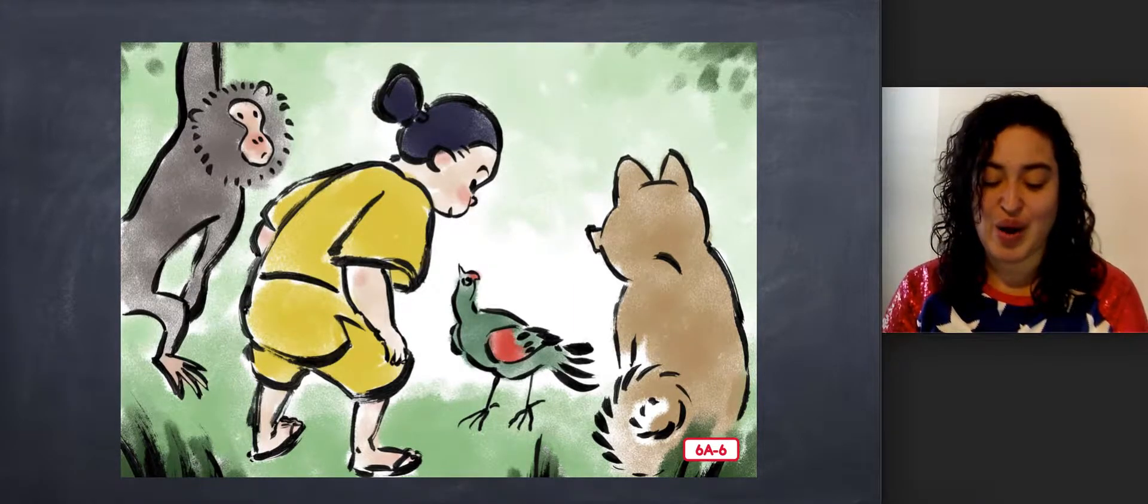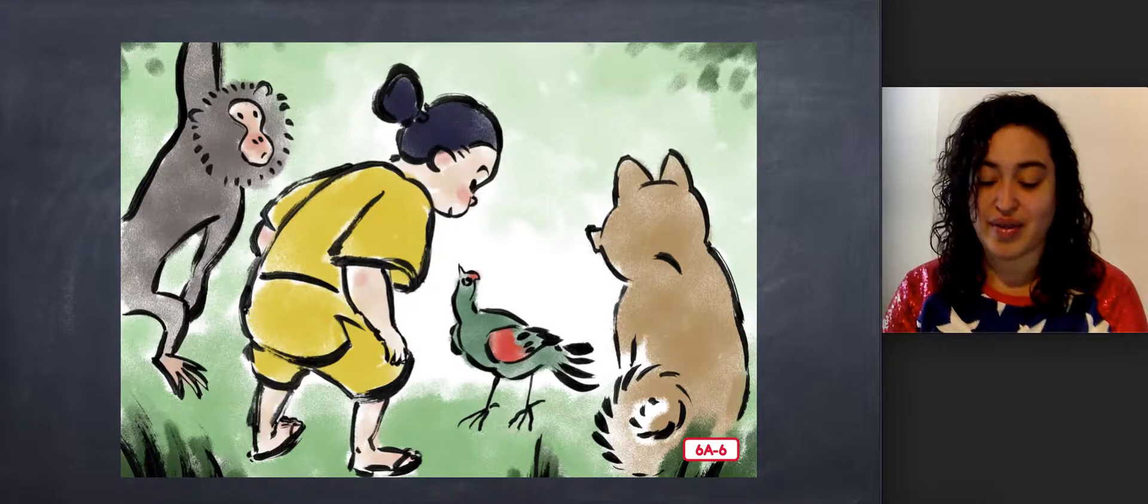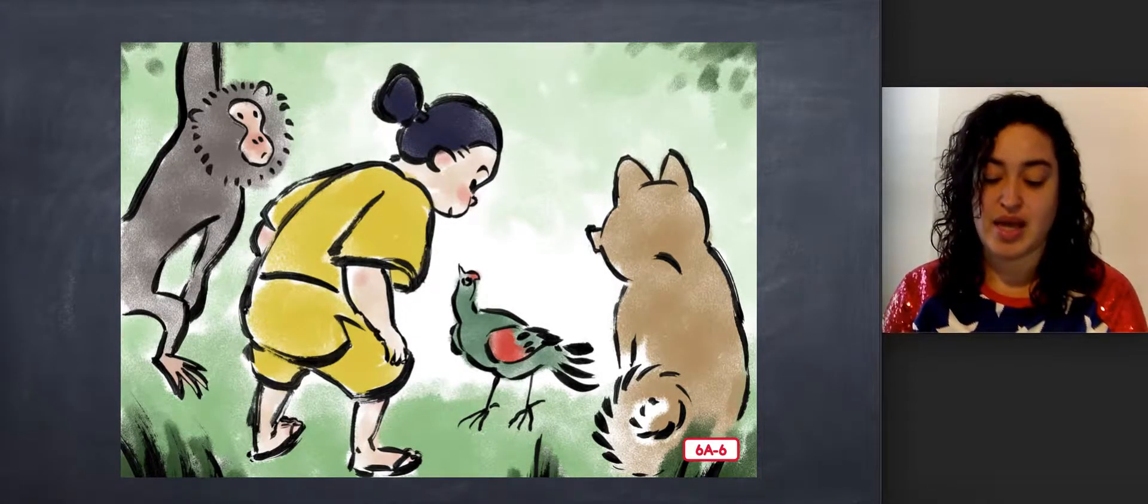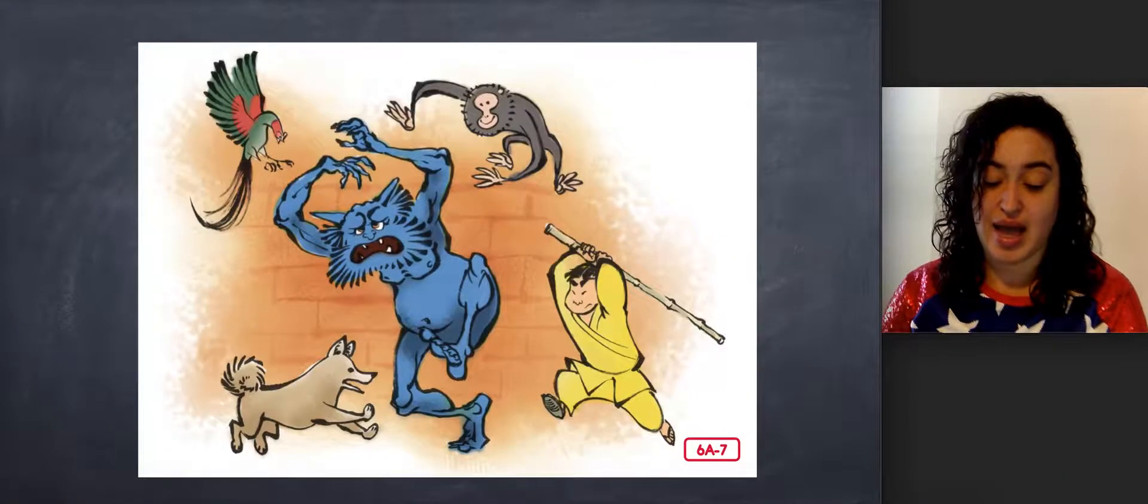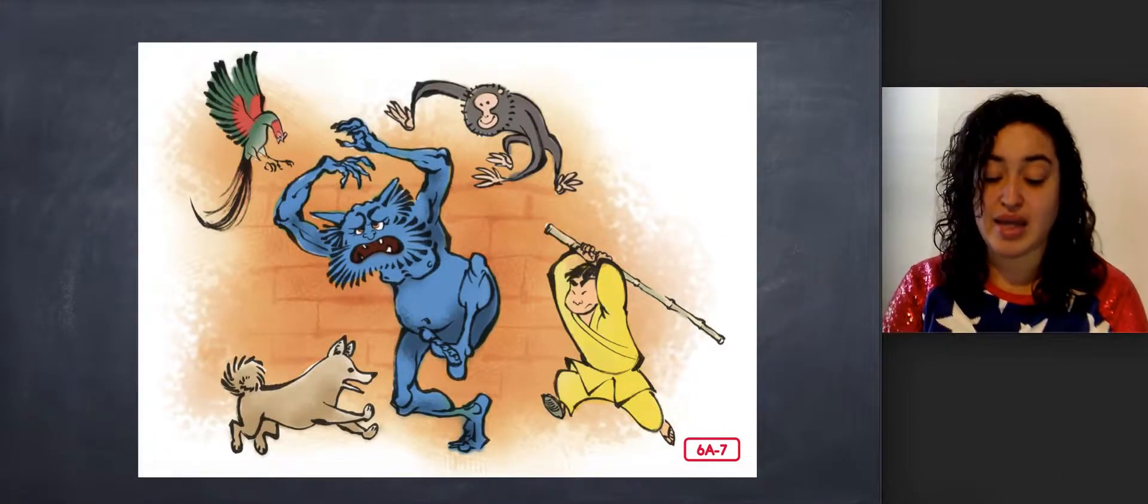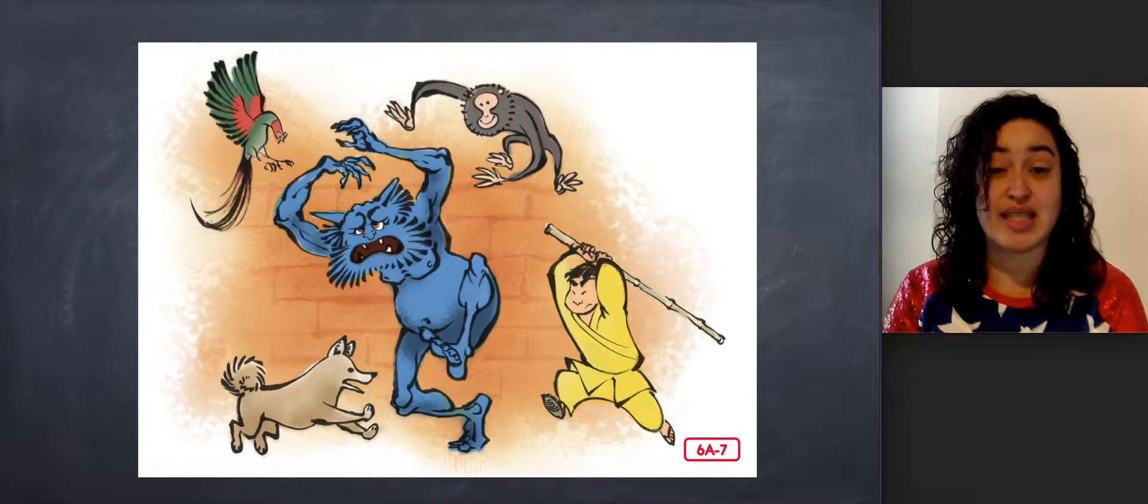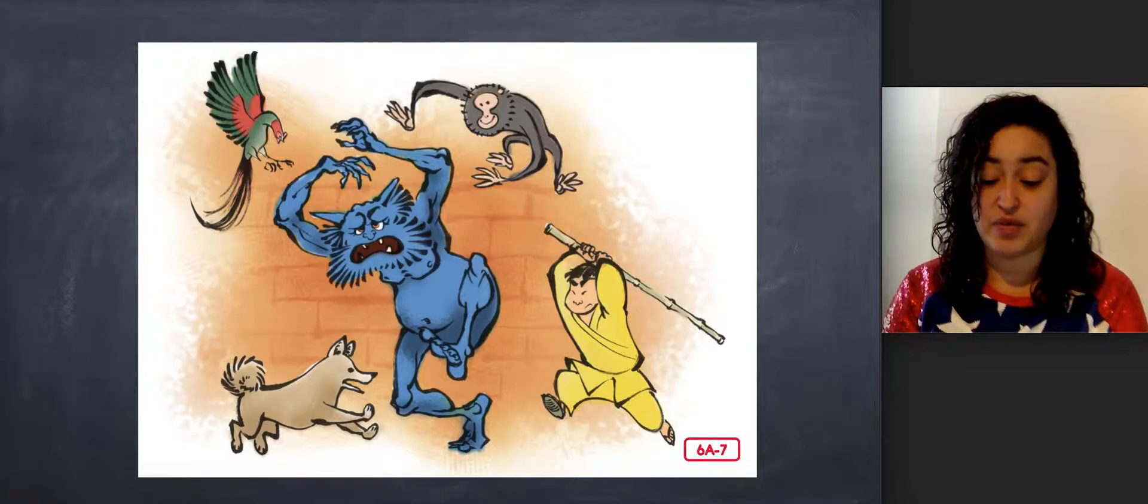So Momotaro went on his way with the dog, the monkey, and the pheasant following close behind. They soon came to the island of the oni. The oni lived in a big stone castle. The pheasant flew over the high castle walls. He swooped down and flew back and forth so fast that it scared the oni. The pheasant flew down quickly in a curving motion. The oni shouted and screamed and ran about in confusion.